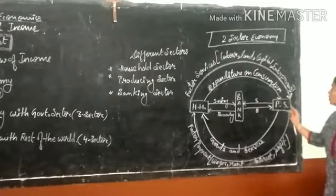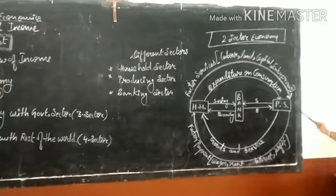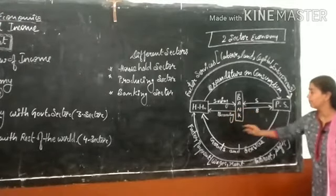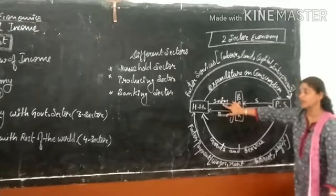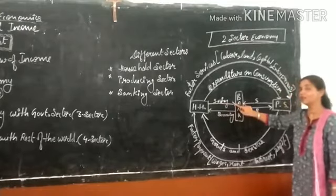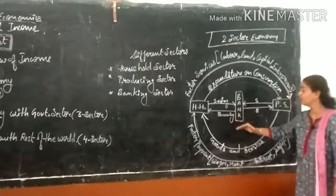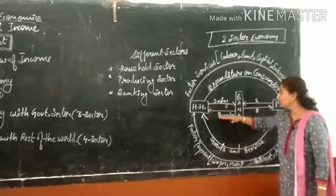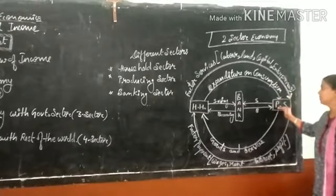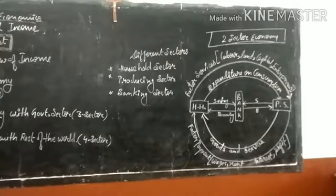If the household sector or producing sector requires money or finance, the banking sector also provides borrowings — it lends money. Keep in mind the direction of arrows when drawing the flow chart. For example, household sector gives factor services to producing sector, so the arrow goes from household to producing. The producing sector gives factor payment to household, so the arrow goes from producing to household. Banks receive savings, so arrows go from household and producing to bank. Banks provide borrowings, so arrows go from bank to household and from bank to producing sector.